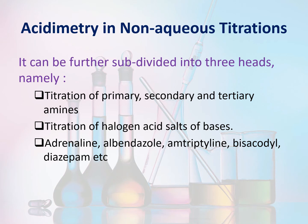Acidimetry in non-aqueous titration is further divided into three heads: titration of primary, secondary, and tertiary amines; titration of halogen acid salts of bases. The drugs include adrenaline, albendazole, amitriptyline, bisacodyl, diazepam, etc. These are all weakly basic substances. The titrant used is 0.1 molar perchloric acid. The solvent is glacial acetic acid. The indicators are crystal violet and oracet blue.